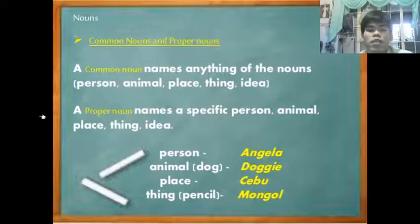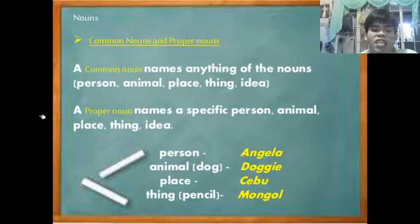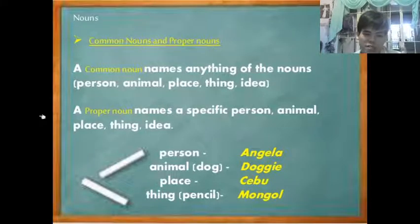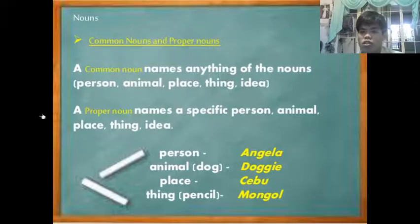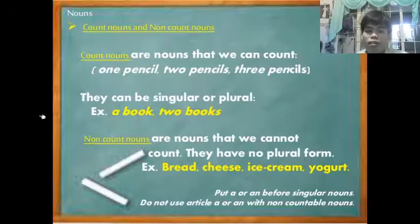Next are common and proper nouns. A common noun names any general person, animal, place, or thing, while a proper noun names a specific person, animal, place, thing, or idea. A common noun is used for something referred to by everyone in general, while a proper noun is specific. For example, 'dogs' is a common noun. If we want to use a proper noun, we specify: German Shepherd, Shih Tzu, and so on.